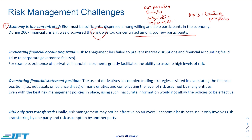Despite whatever risk management you do at an individual level, one bankruptcy can lead to another bankruptcy. Risk management has actually evolved over the years with a number of regulations, strategies, and acts implemented, but the fact remains that risk management has failed to prevent market disruption and accounting fraud at a greater level.